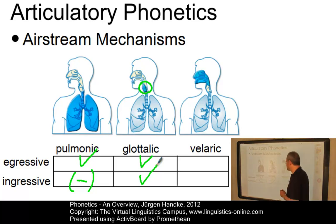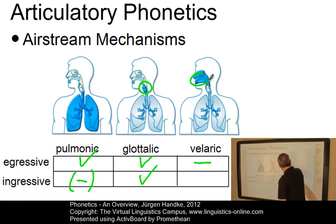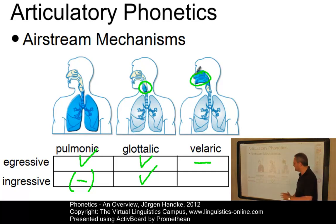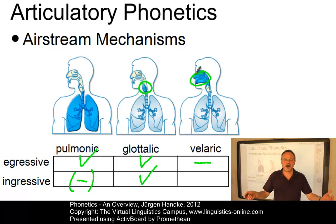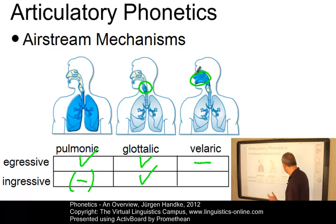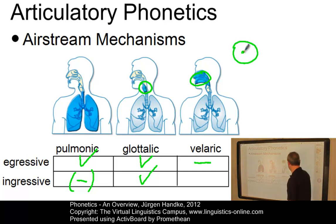Finally, we have the velaric airstream, which cannot be used egressively. It is produced here in the vocal tract itself. But in an ingressive form, it can be used in sounds such as — and I like this one — a kiss sound. The phonetic symbol for a kiss is rather nice, isn't it? So it can be used.